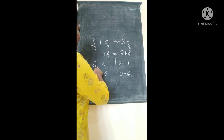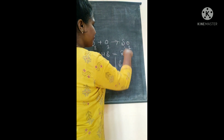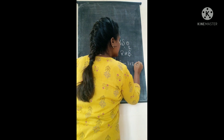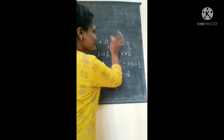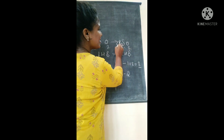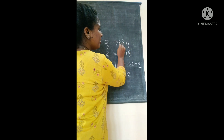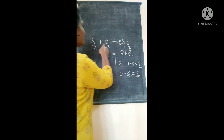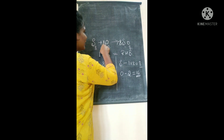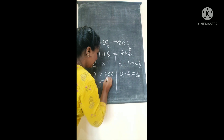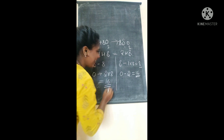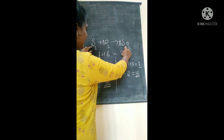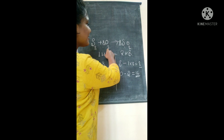On the left-hand side we have 8 sulfur atoms. On the right-hand side we have only 1. If I add 8 here as the coefficient, it equals 8 — sulfur is balanced. Now oxygen has changed; it is now 16. So if I add 8 here, it will become 16 on the right side as well. Both sides are balanced: sulfur 8 and oxygen 16 on each side.